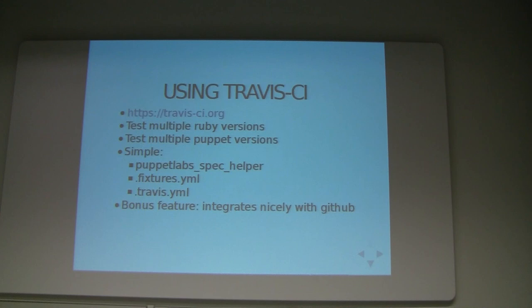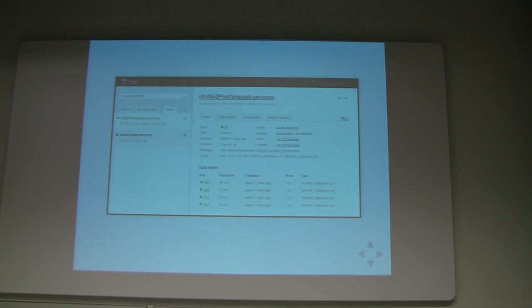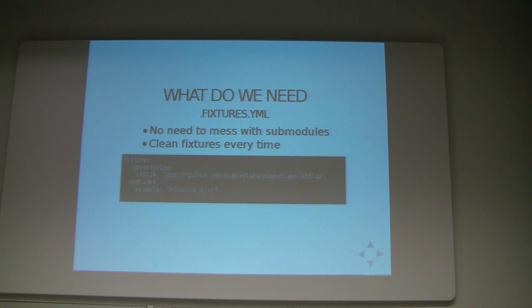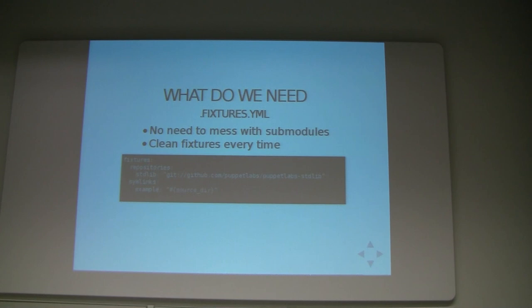This is pretty much how it looks. In this example I'm testing against two Ruby versions and two Puppet versions, and everything is green — all is good. When you normally want to include external modules in your fixtures directory, you can add it as a submodule, but that's bothersome. When you use the .fixtures file, you can just add the repositories. I've used stdlib here as an example, and you will automatically make sure that when you run your tests, that module is available in that fixtures directory. Then of course we add symlinks to our own source file.